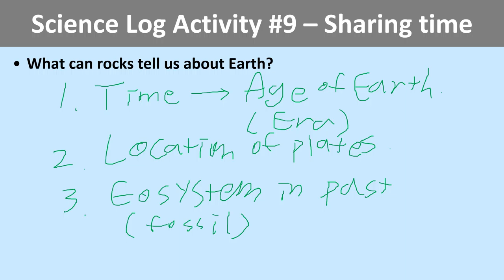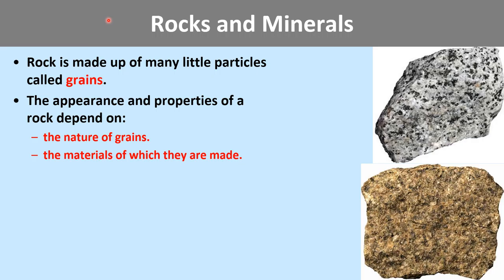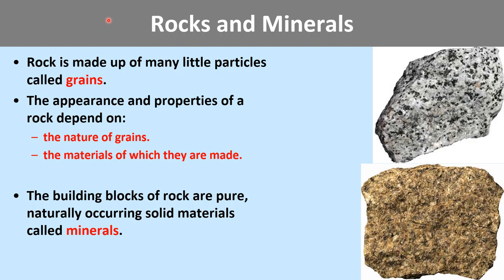Those are example answers. So — rock and mineral. First of all, let's think about rock. Rock is made out of tiny little grain particles — upper side has black and white, downside has gray and yellow particles. Rock is made of many little particles known as grains. When it comes to the appearance and properties of a rock, it depends on the nature of grains and the material of which they're made. The building blocks of rock are pure naturally occurring solid materials called mineral.